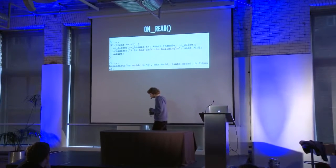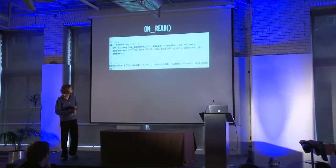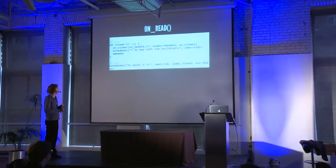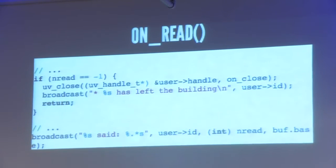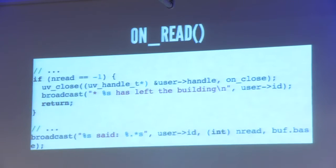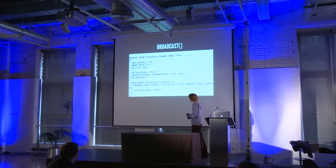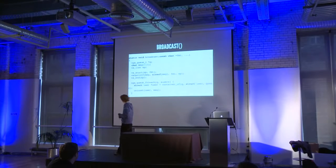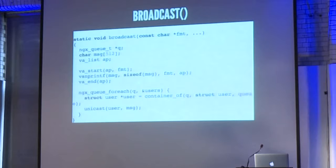This is the onRead callback. It does two things: first, it handles network errors — if that happens, we close the connection and broadcast a message saying the user has gone. If all goes well, we have received some data from the user, and we simply broadcast it to all other users, which is of course the basis of a chat app. The broadcast function formats the message and sends it to all individual users that are currently connected.